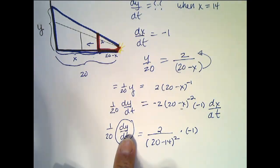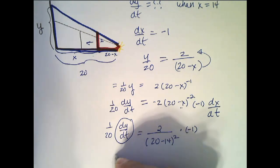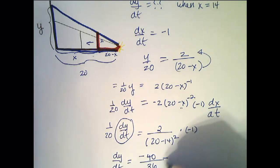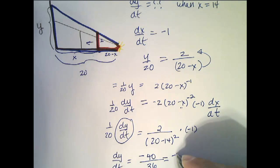So to solve for dy/dt, I'm just going to multiply both sides by 20, and I'm going to simplify over here on the right. So dy/dt equals negative 40 over (20 minus 14), which is 6 squared, so 36. So if I reduce this, I see this can reduce to negative 10 ninths.